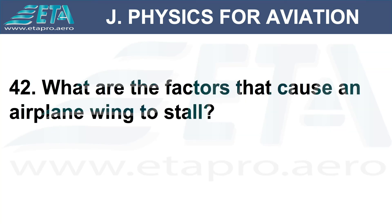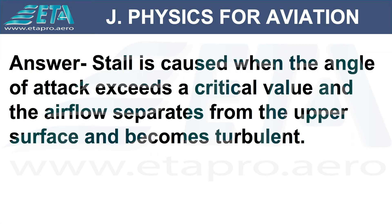What are the factors that cause an airplane wing to stall? Answer: stall is caused when the angle of attack exceeds a critical value and the airflow separates from the upper surface and becomes turbulent.